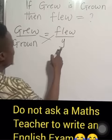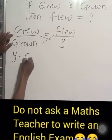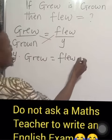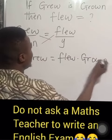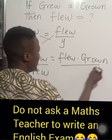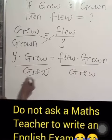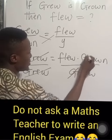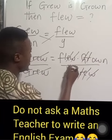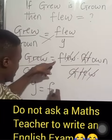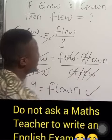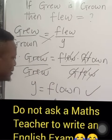Then we cross-multiply: y times grew equals flew times grown. To get y, divide both sides by grew. Now we cancel the letters: G cancels G, R cancels R, E cancels E, W cancels W — so y is F-L-O-W-N. Therefore, the past participle of flew is flown.